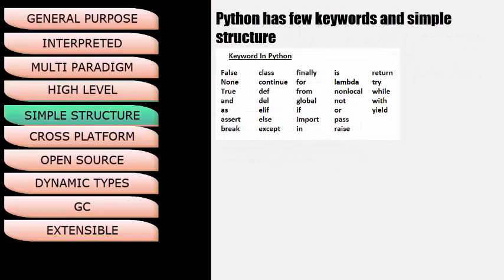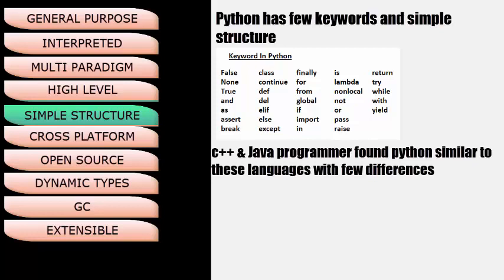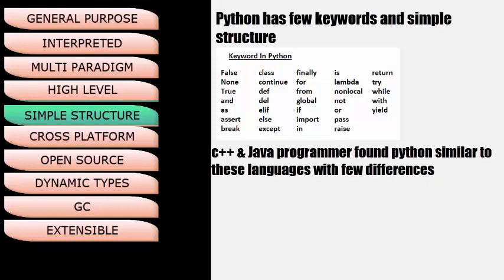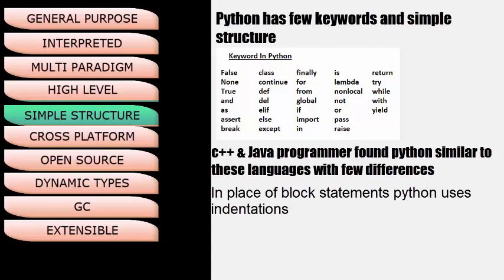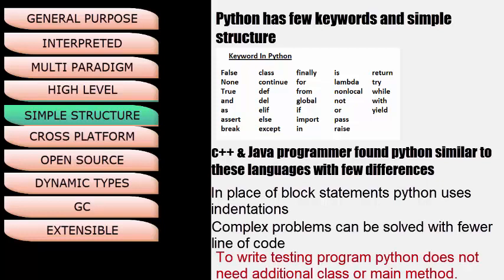Python has few keywords and a simple structure. C++ and Java programmers find it very similar to those languages with few differences. In C++ or Java, curly braces are used for control structures, classes, or functions. Python uses indentation instead. We can solve complex problems in less time with fewer lines of code. To write a Hello World program, Python just needs one command, with no additional main method, class, or anything else — unlike C++, Java, or other languages.